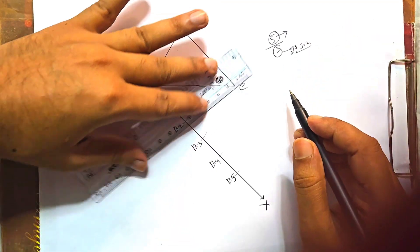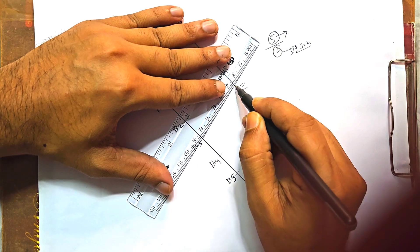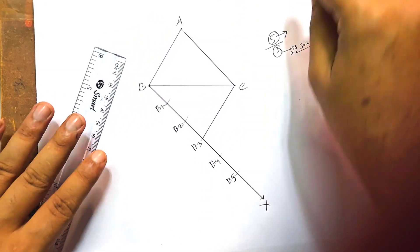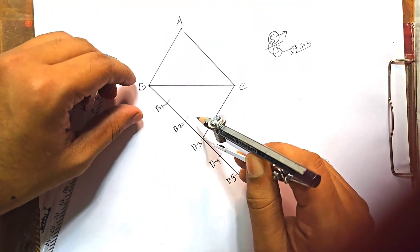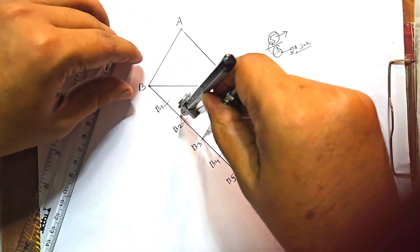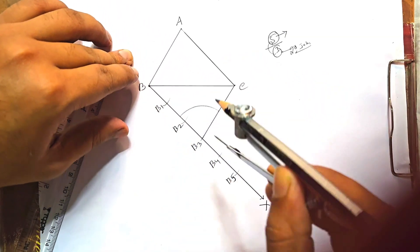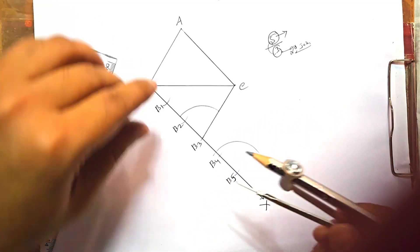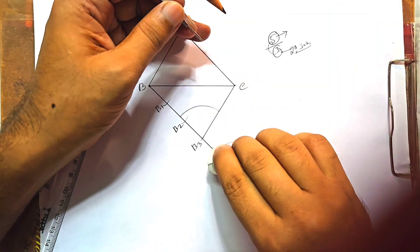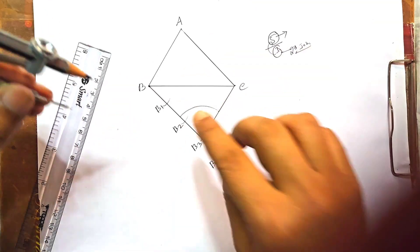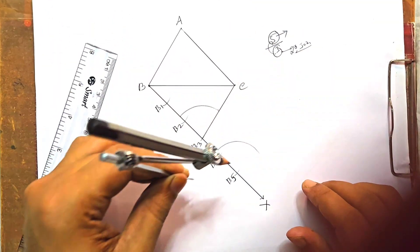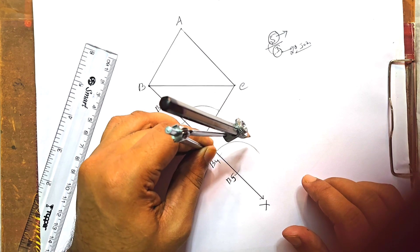That means we have B3C. Okay? We have B3C. Now we have B3C — that means at B3, we make one point. Same measurement, at B5 we make one point, at G3 we make one point, at B3 we make one point.